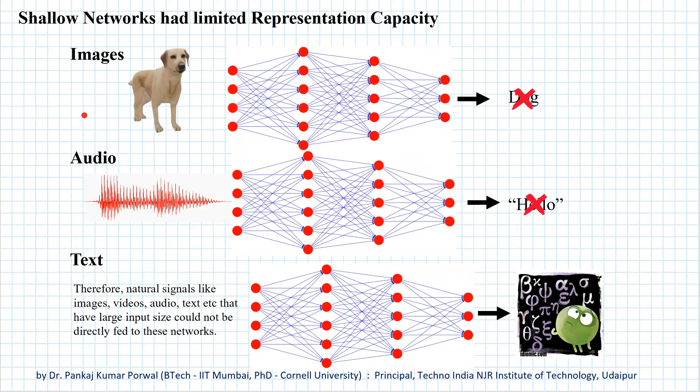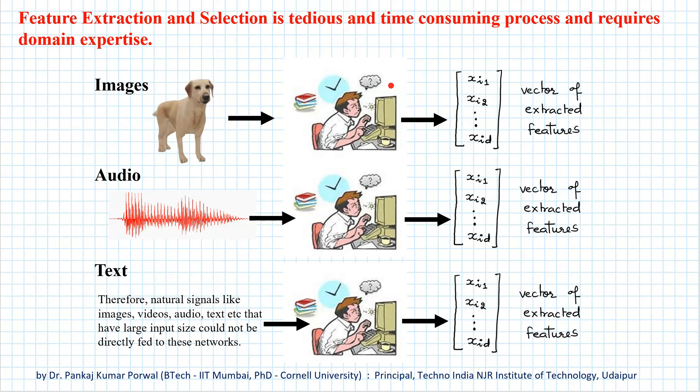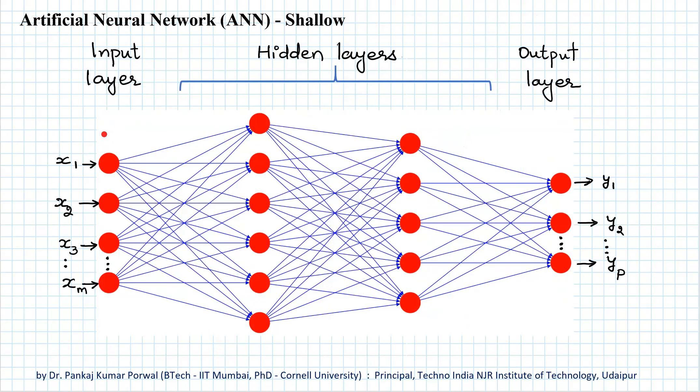Therefore, natural signals like images, audio, text, etc. that have large input size could not be fed to these networks directly. Rather, experts had to carefully extract and select small number of features that could be fed to the shallow networks.